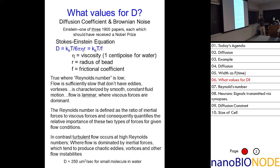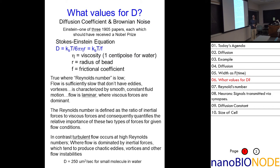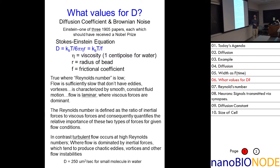D equals k_B T over F, or k_B T over 6πηR — but this is only true where the Reynolds number is low. That is when the flow is sufficiently slow that you don't have eddies and vortexes — characterized by smooth, laminar flow where viscous forces are dominant.